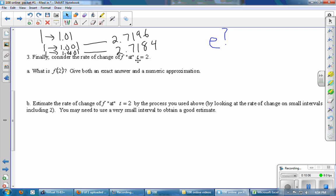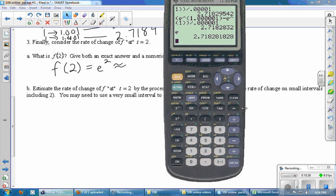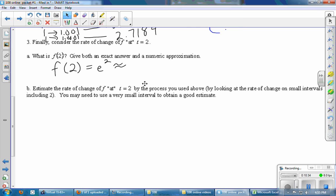Next one is the rate of change of f at t equals two. So we want f of two, an exact, and a numeric approximation. So the exact, f of two is e to the two. If we type this into a calculator, we'll find e squared is 7.389056. Putting lots of digits, I'm not going to write them all down, but just so that we have e squared up there.